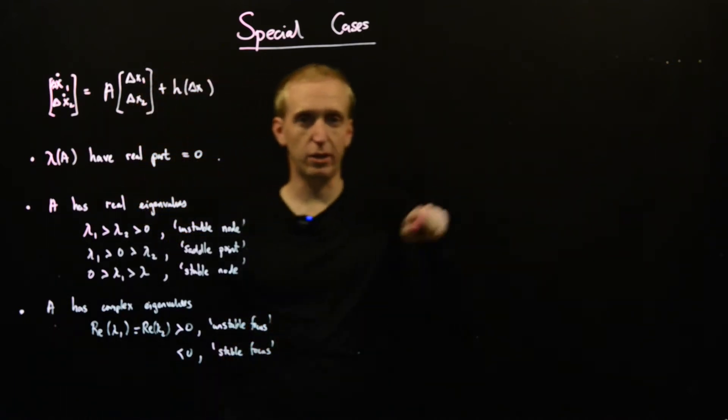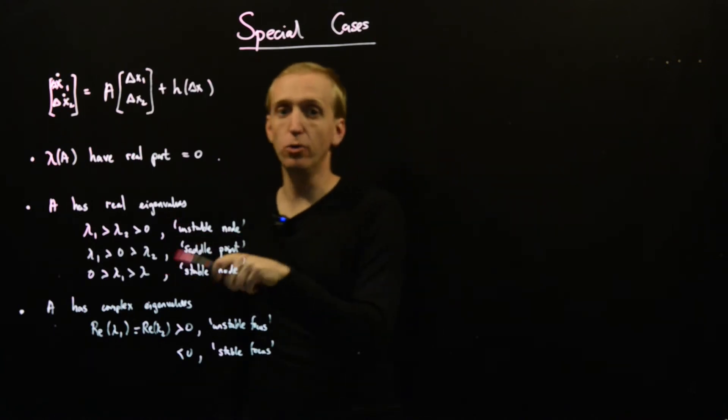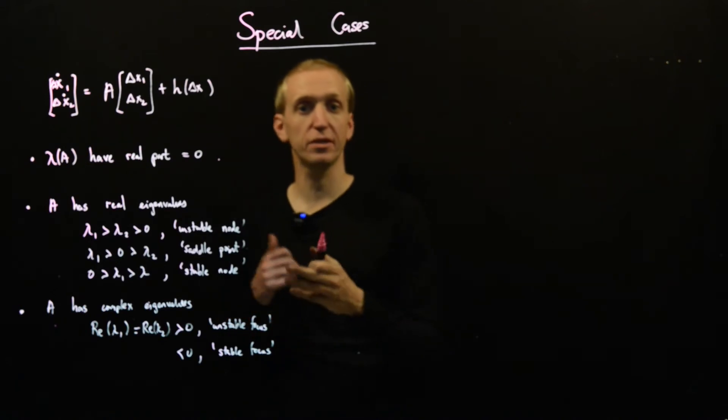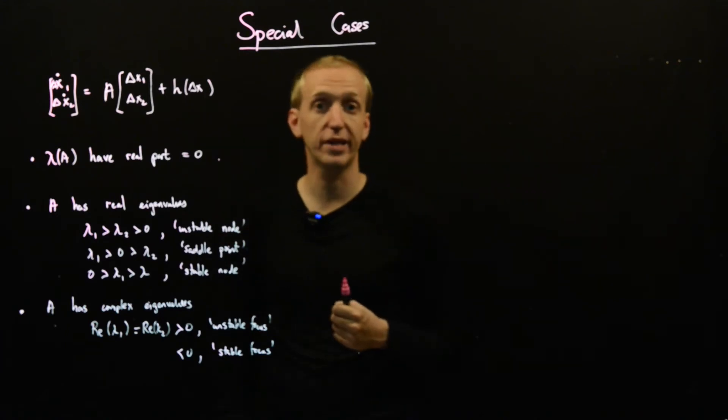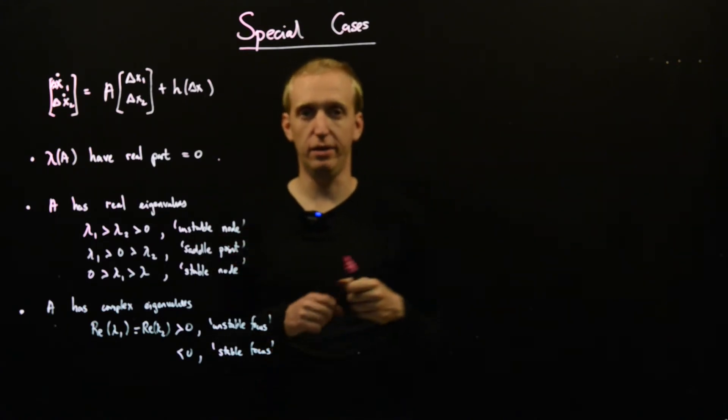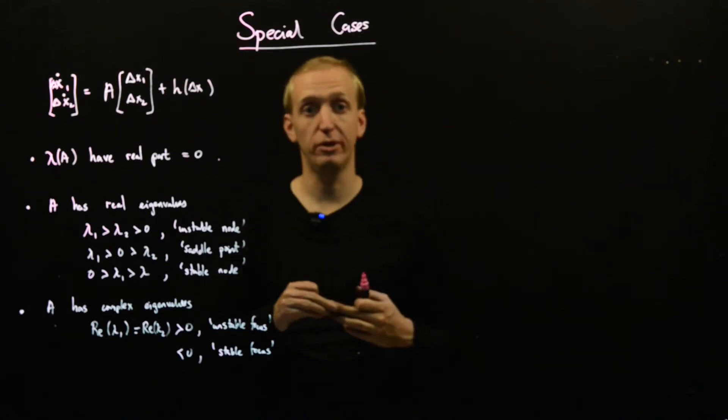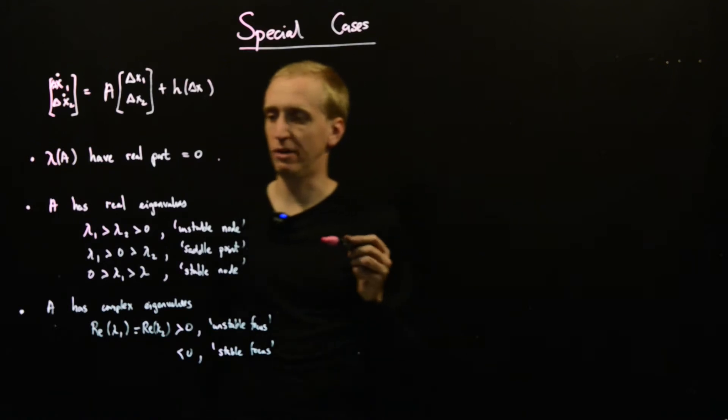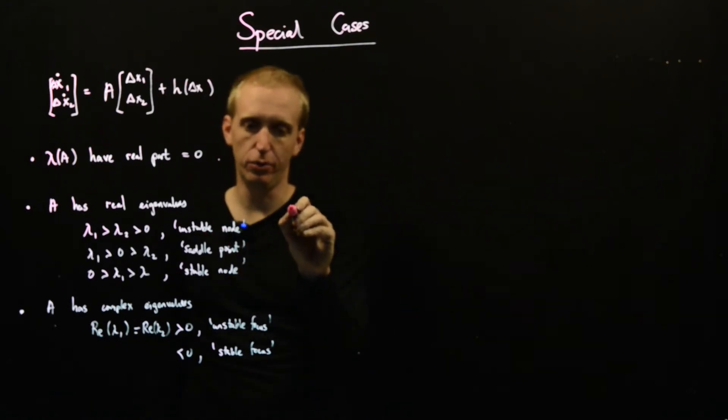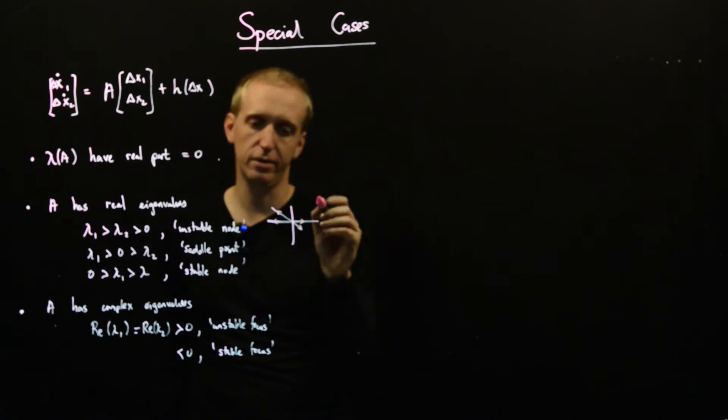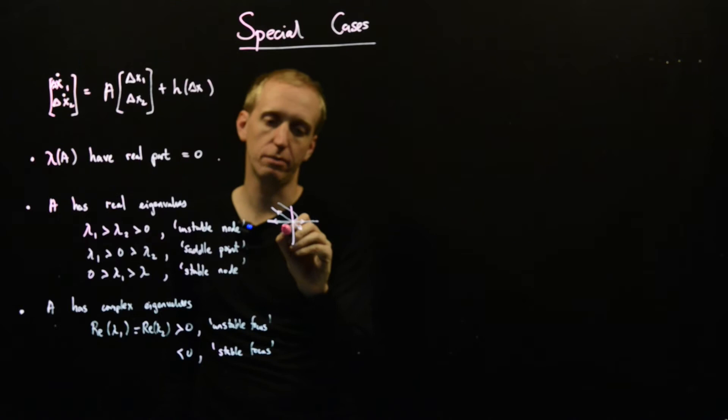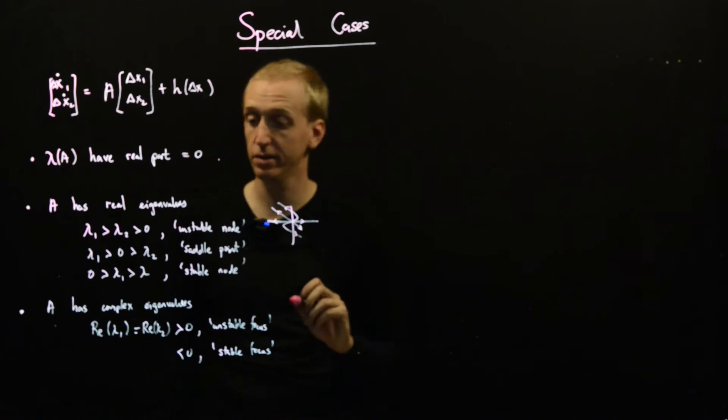And the focus behaviors, they corresponded to spiraling into the origin. The nodes, there were two eigenvectors, and one was faster than the other one. And you sort of shrunk along those two eigenvectors at different rates. And the saddle point, you have one stable direction and one unstable direction. And so the rough shapes were unstable node. You have these two directions, and along those eigenvectors, you just go out and then any other combination, you also go out, but maybe along different paths, depending on the speeds of the eigenvectors.